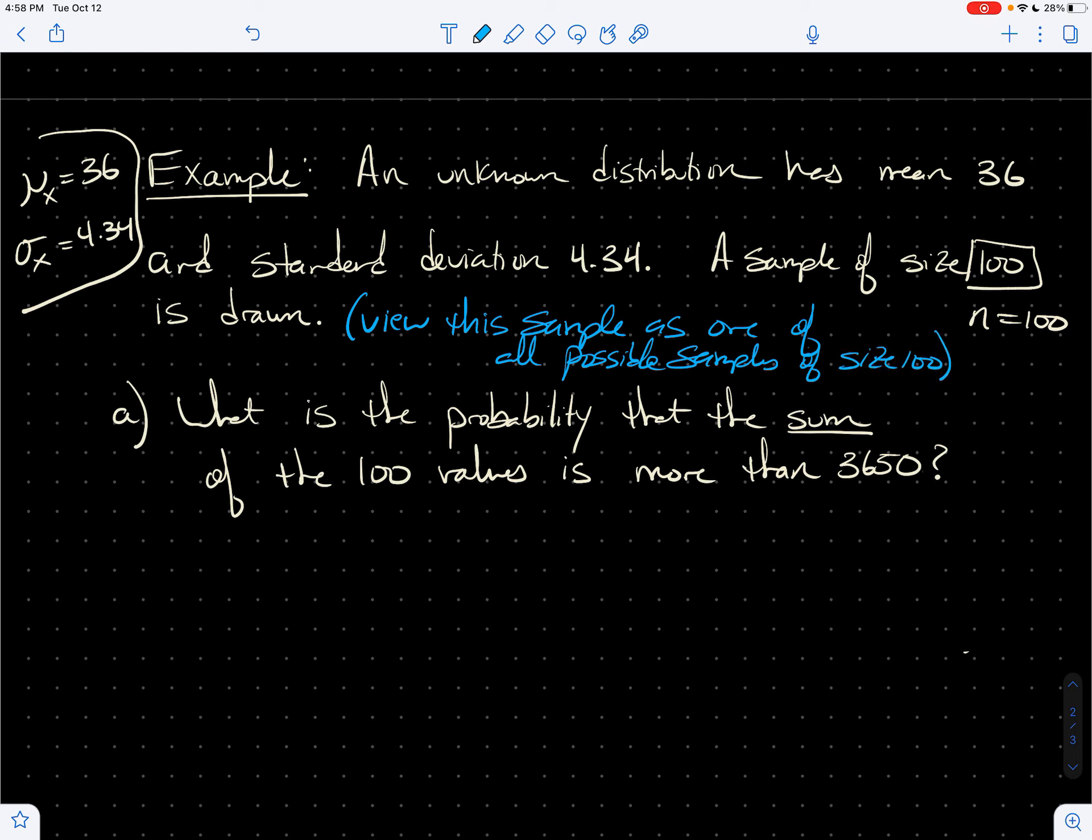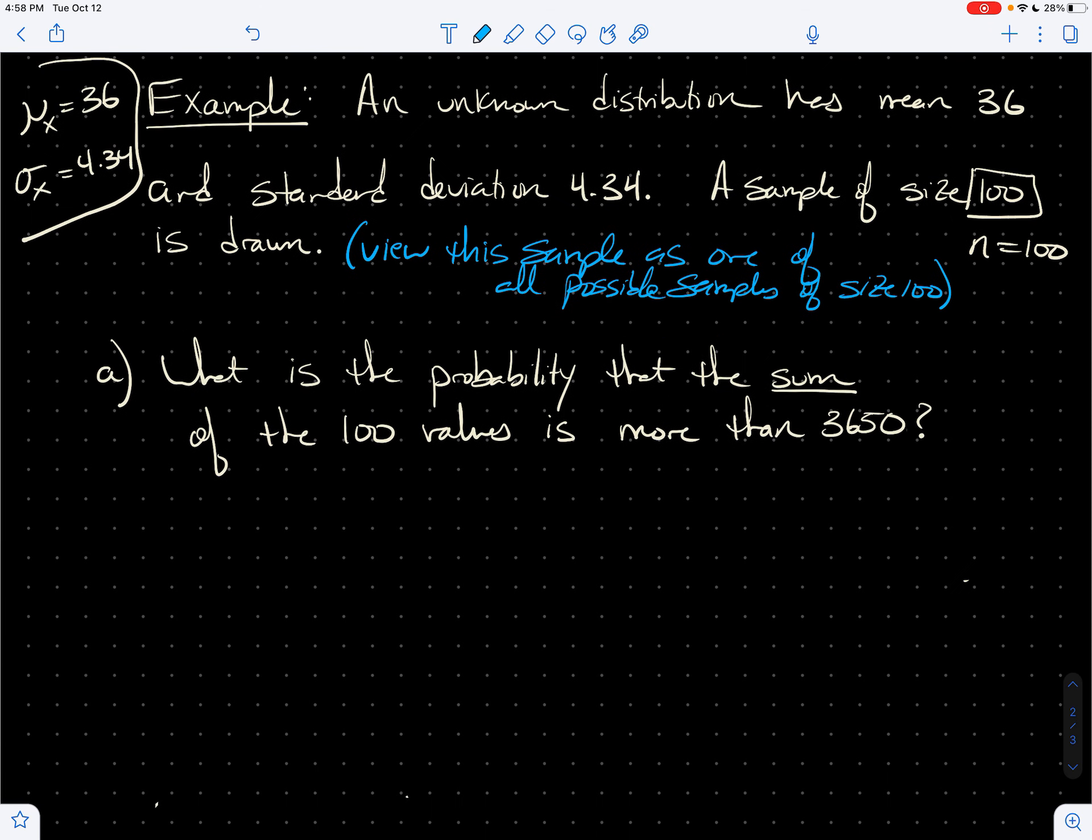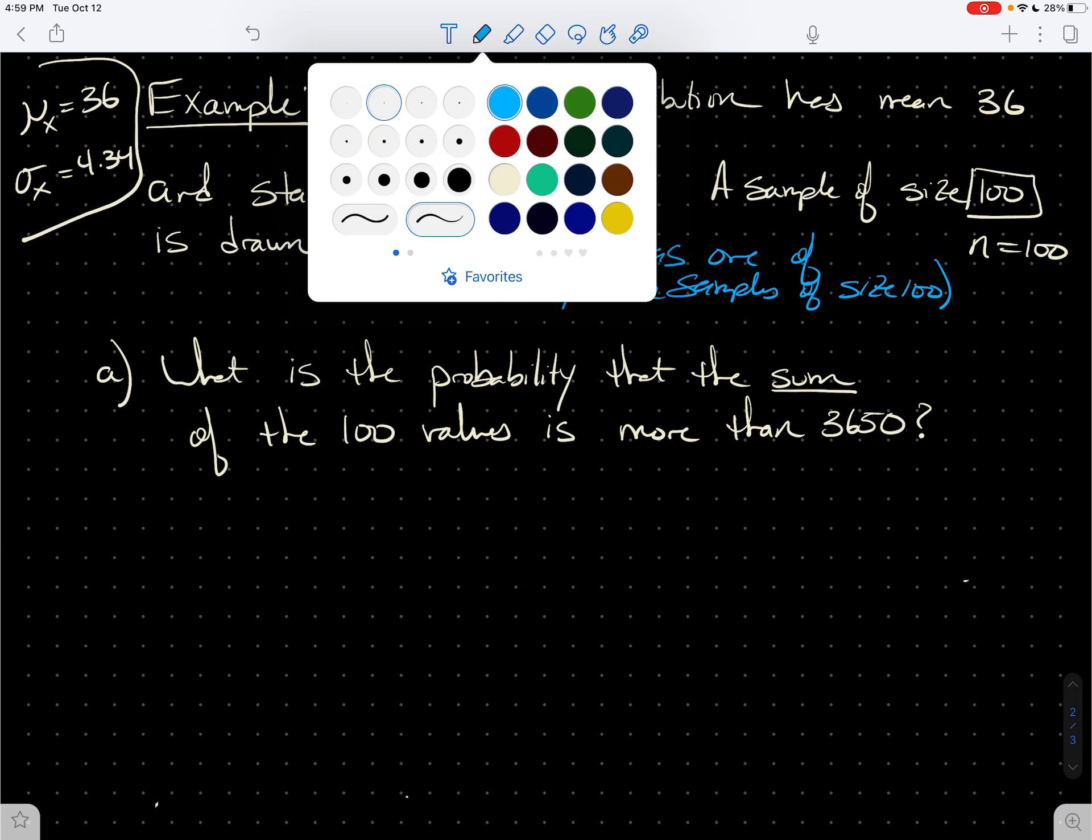So let me slide part A down here. And here we go. So it says, what's the probability that the sum of the 100 values is more than 3650? And so, okay, so first off, sum, we know that's just sigma x.